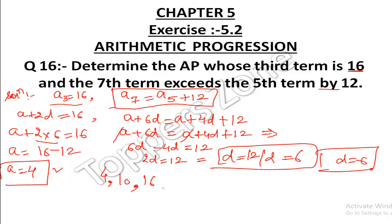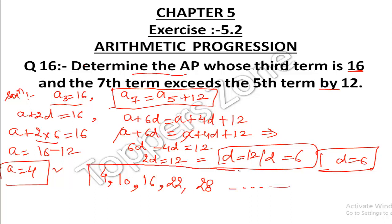So our AP starts with a = 4, and with common difference 6, the sequence is: 4, 10, 16, 22, 28 and so on. We have determined the AP by finding both the first term A and common difference D.